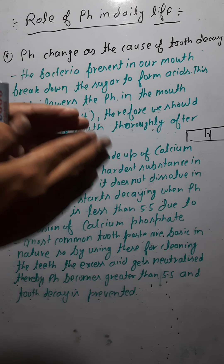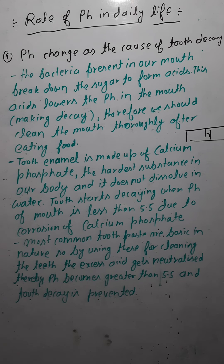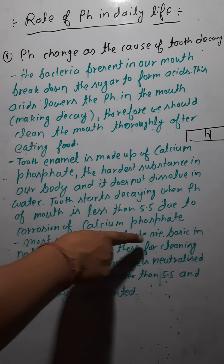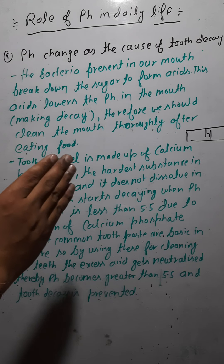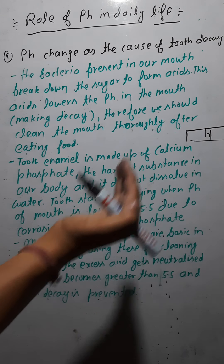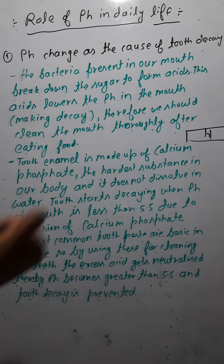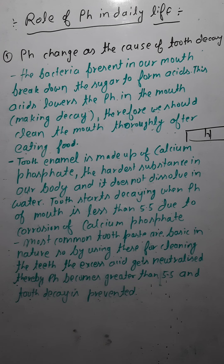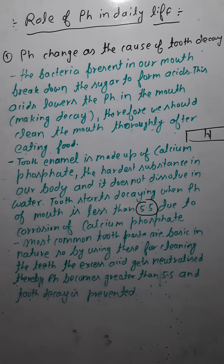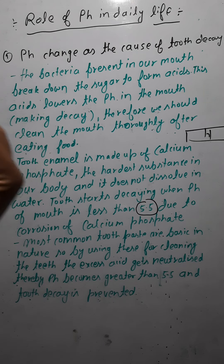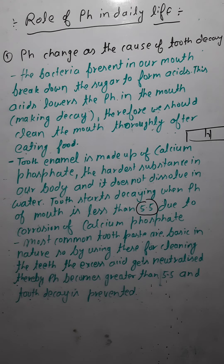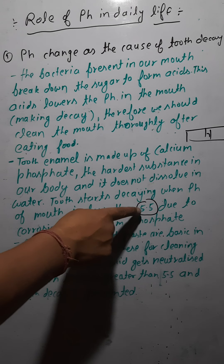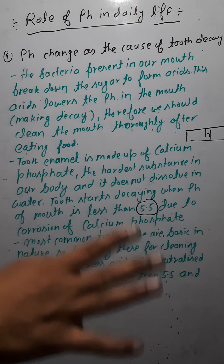The remedy is toothpaste, as most toothpastes are basic in nature, having pH more than 7. Since the pH inside our mouth is less than 5.5 during tooth decay, we need to increase the pH. Using basic toothpaste increases the pH above 5.5 and tooth decay can be prevented.